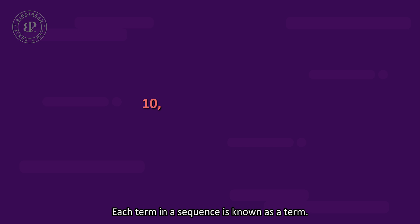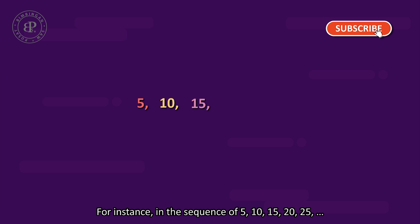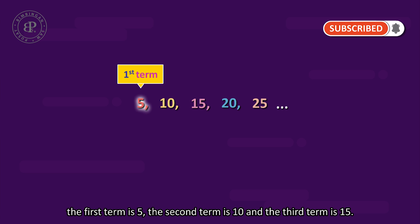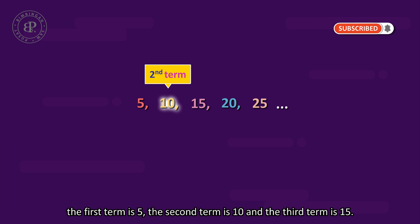Each term in a sequence is known as a term. For instance, in a sequence of 5, 10, 15, 20, and 25, the first term is 5, the second term is 10, and the third term is 15.